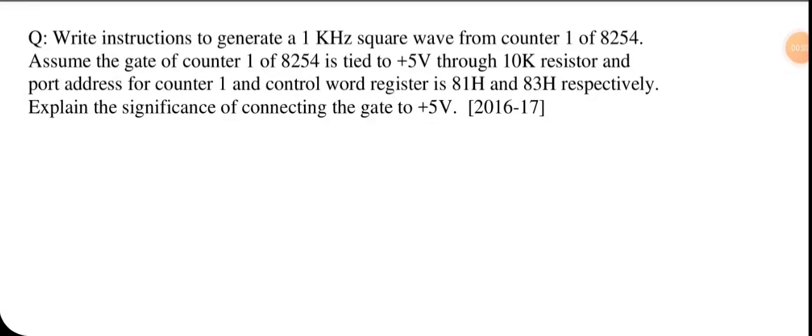In this video I am going to discuss one question from AKTU 2016-17 paper. The question asks: write instructions to generate a 1 kilohertz square wave from counter 1 of 8254. Assume the gate of counter 1 of 8254 is tied to plus 5 volt through a 10 kilo-ohm resistor. The port address for counter 1 and control word register is 81H and 83H respectively. Now explain the significance of connecting the gate to plus 5 volt.